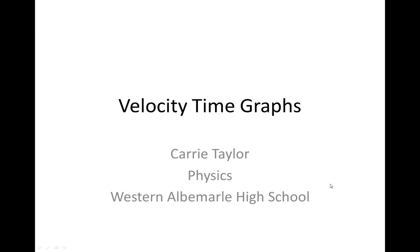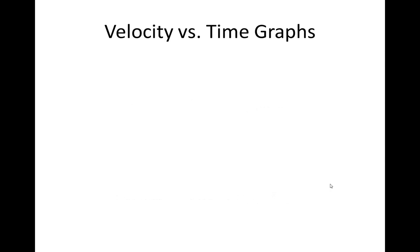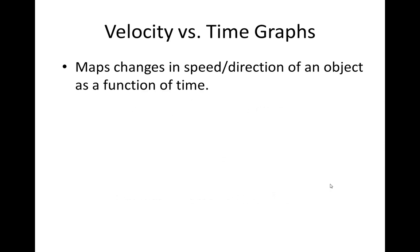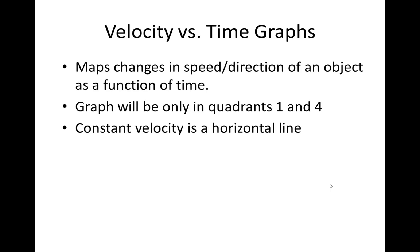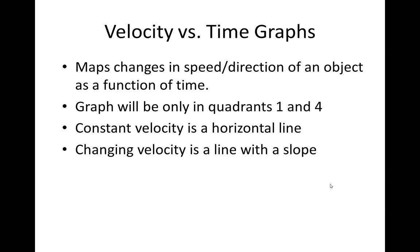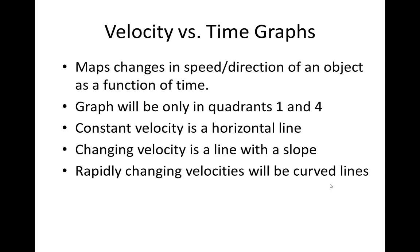This video is talking about velocity time graphs, and at the end we'll briefly touch on acceleration time graphs and jerk time graphs. Velocity time graphs simply map changes in speed and/or direction of an object as time progresses. Just like a position time graph, it's only in quadrants 1 and 4. Constant velocity is a horizontal line, changing velocity is a line with a slope, and rapidly changing velocities will be some kind of a curved line.